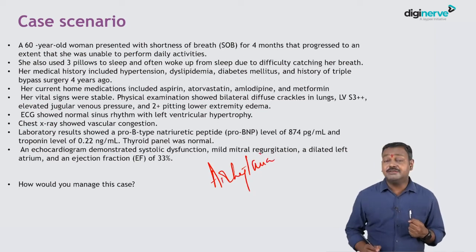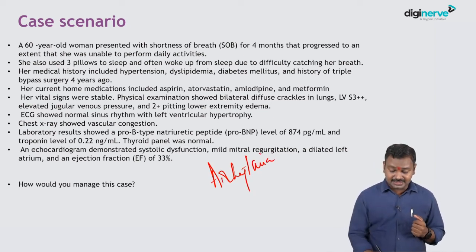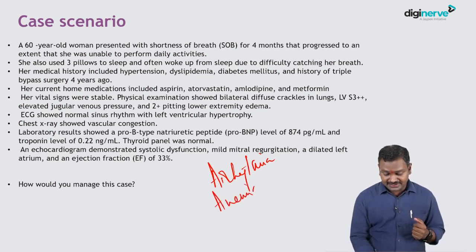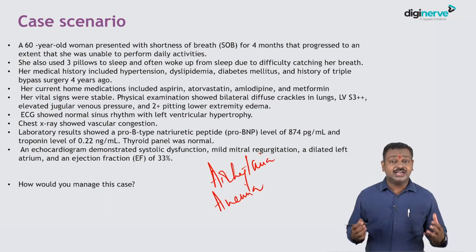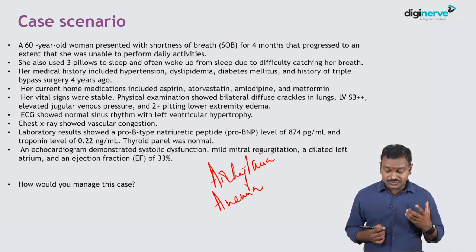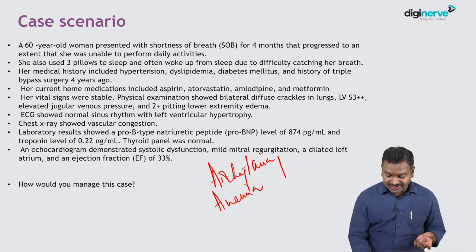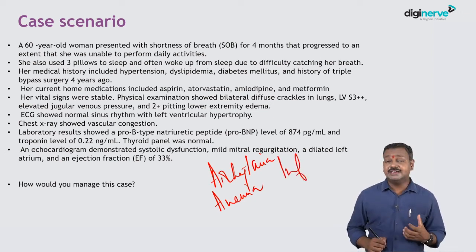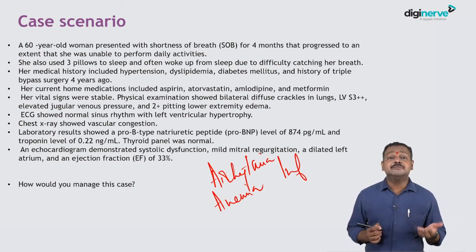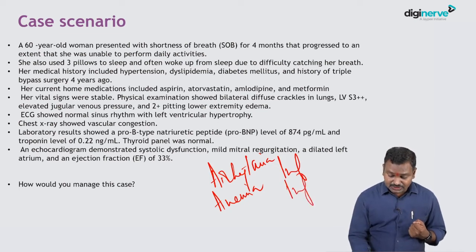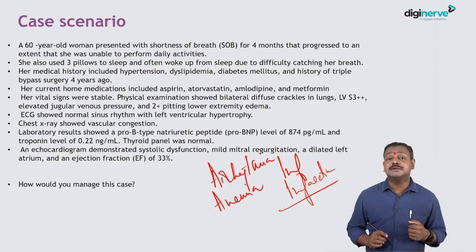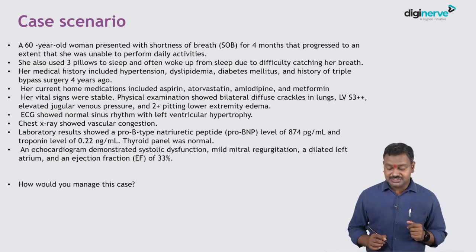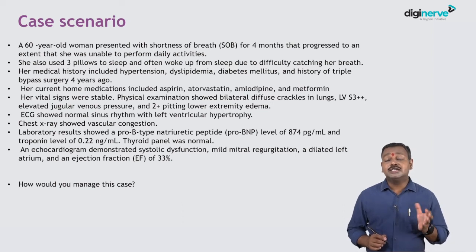Possibly an arrhythmia would have occurred and precipitated heart failure, but the ECG is normal here. Second is anemia, which can precipitate heart failure — this patient is on aspirin, so she could have a GI bleed and anemia. Next, any infection can precipitate heart failure, such as a lung infection or urinary tract infection. Infarction is also important — the patient could have developed an MI. Non-compliance to medication is another key precipitating factor.